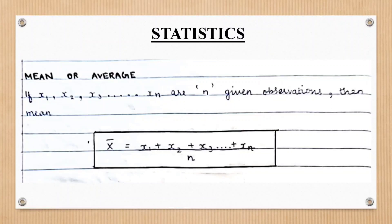Here we are going to learn statistics. In statistics there are three topics: mean, median, and mode. The first topic is mean. Mean is nothing but it is an average.